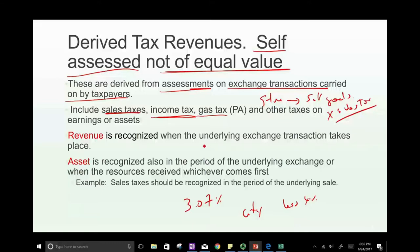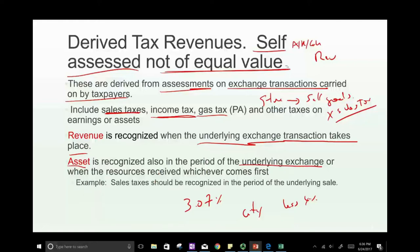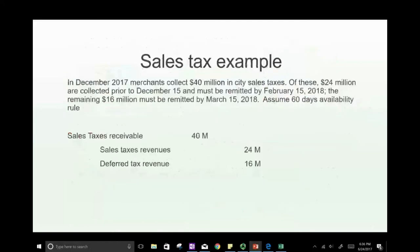When do we recognize derived tax revenue? Revenue is recognized when the underlying transaction takes place. Once the transaction occurs, the government can recognize the revenue because they're entitled to the taxes. Every time you recognize revenue, you credit revenue and debit an asset — either receivable or cash. The asset is recognized in the period of the underlying transaction or when the resource is received, whichever comes first.